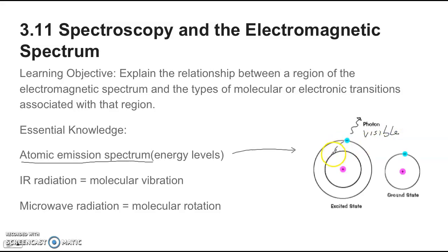So electrons moving from the excited state to the ground state will give off energy in the form of visible light.